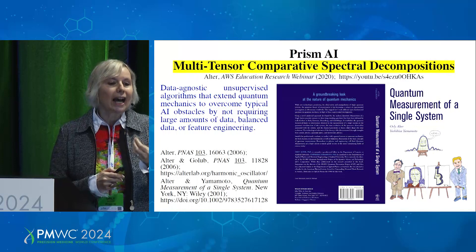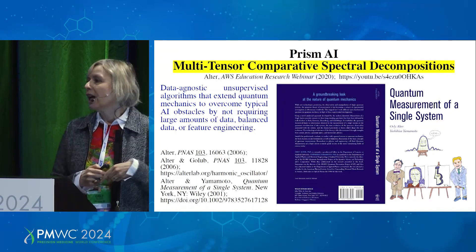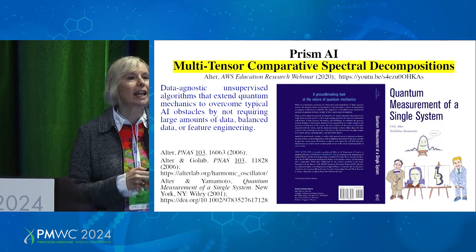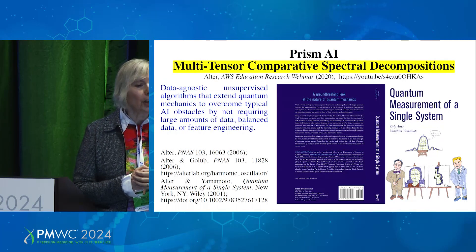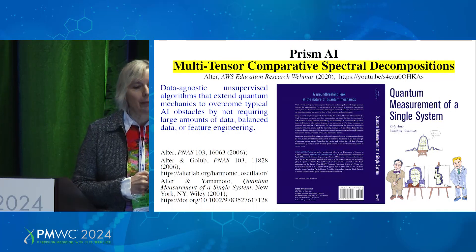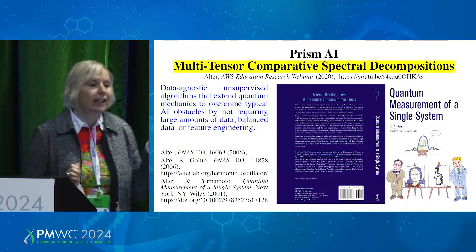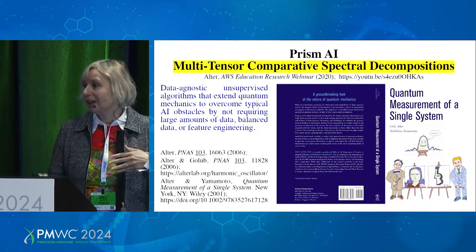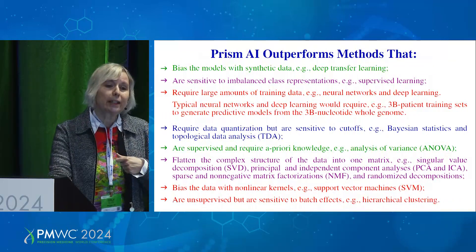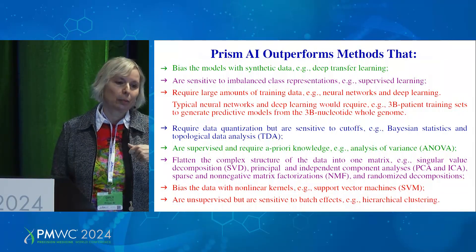At Prism, our AI is underpinned by our algorithms: the multi-tensor comparative spectral decompositions. We heard in this panel earlier about tensors and multi-tensors — one might think that's the future, but it's happening now. Those algorithms are data agnostic and unsupervised. We developed them to extend quantum mechanics and to overcome the typical AI obstacles by not requiring large amounts of data, not requiring balanced data, and not requiring feature engineering. In that, Prism outperforms, dare I say, all methods out there for your clinical biomarker and drug development process.